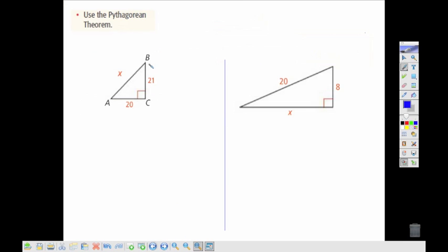If I'm going to use the Pythagorean Theorem, we want to recognize that our x is across from the right angle, making that our c, so we're looking at 20 squared plus 21 squared equals x squared. To solve this, we multiply everything out: 400 plus 441 equals 841, so x equals 29.